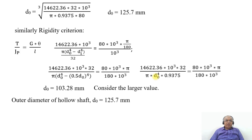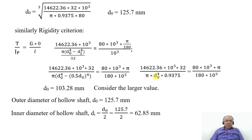We consider the larger value. Therefore the outer diameter of the hollow shaft d0 = 125.7 mm. The inner diameter di = d0 / 2 = 125.7 / 2 = 62.85 mm ≈ 63 mm. This is how you analyze and solve this problem. Thank you.